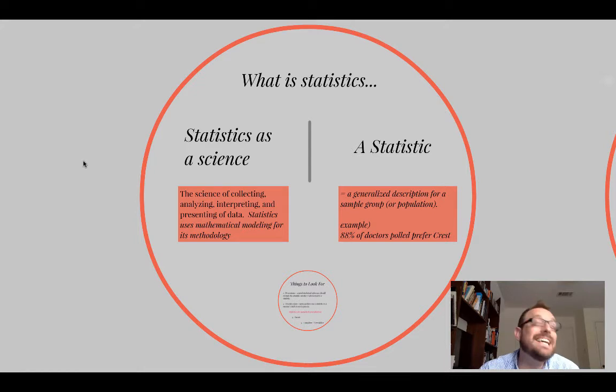But I think we can begin by differentiating statistics as a science versus a statistic. That is, a lot of times when we're reading an argument, people will cite a statistic. They give reference to a statistic, or they'll make a proposition. For instance, they may say that 88% of doctors polled prefer Crest toothpaste. Well, that's not statistics as a science. That's basically a generalized description for a sample group or population that's been polled. And there's a lot of questions here about what goes into this number. And there's also the question of whether or not a statistic, a given statistic, is relevant to an argument that it's about.